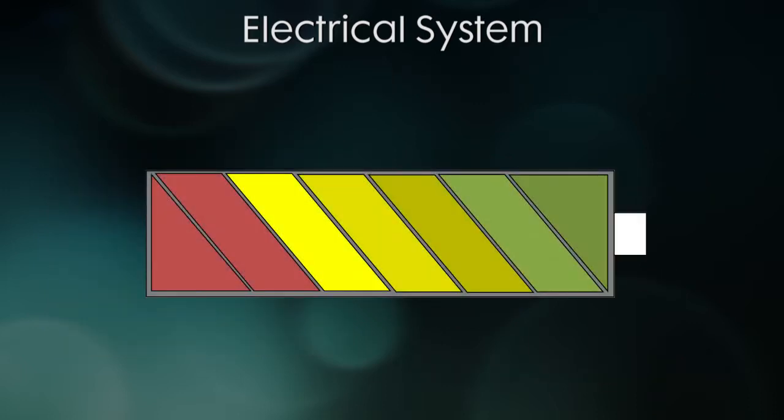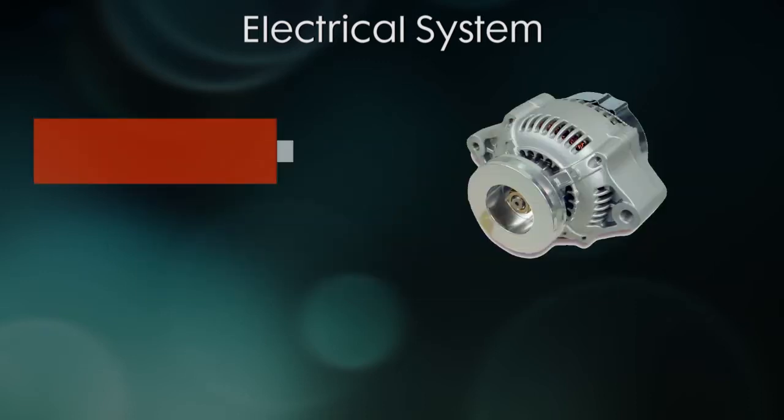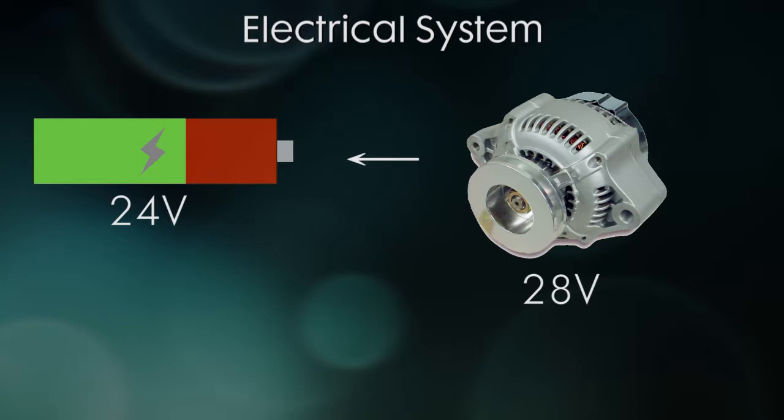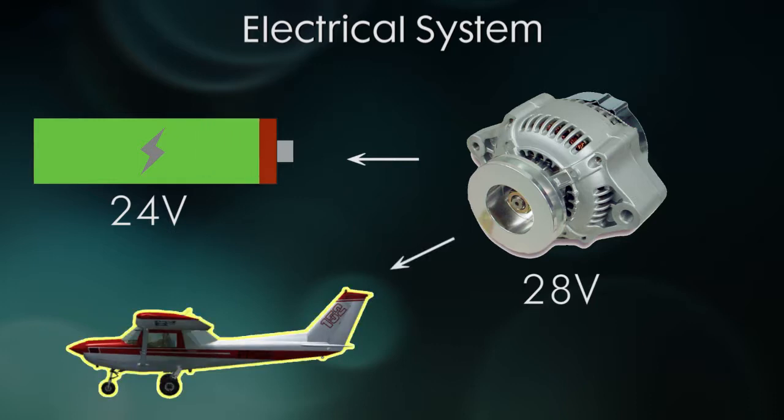Of course if we only had the battery all by itself, it would be pretty useless since it would eventually run out of juice. So we have an alternator. This is an engine driven battery charger. Usually an alternator is a few volts higher than the battery, so it will be 28 volts instead of 24. This is so that the entire electrical system can be powered and so the battery can get charged at the same time.